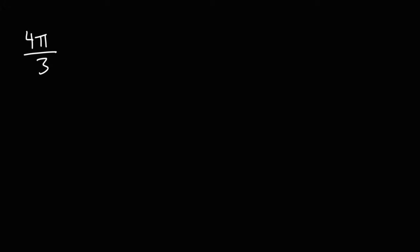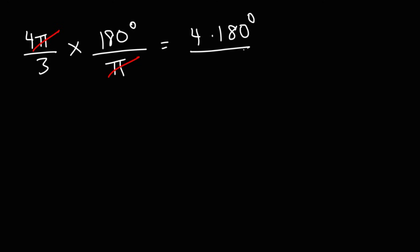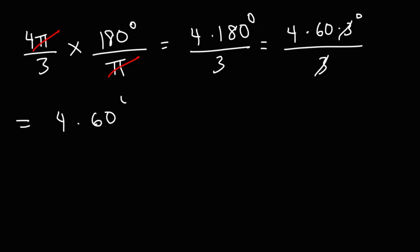Let's try another example: convert 4 pi over 3 radians to degrees. Just like before, multiply by 180 degrees over pi. The unit pi cancels, giving 4 times 180 divided by 3. Since 180 equals 60 times 3, canceling the 3 leaves 4 times 60. 4 times 6 is 24, so 4 times 60 is 240. Thus, 4 pi over 3 is equal to 240 degrees.